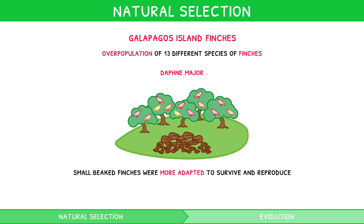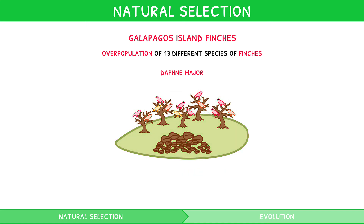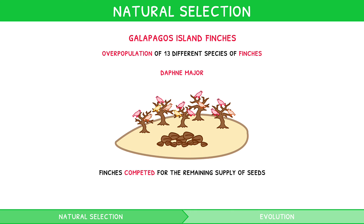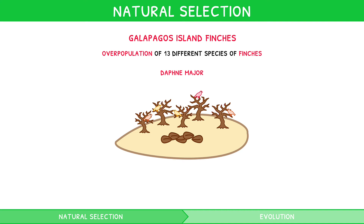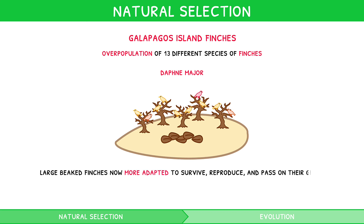However, after a drought in 1977, plants no longer produced seeds. The finches competed for the remaining supply of seeds, so the number of small seeds dwindled, leaving only large seeds behind. As a result, the number of finches with large beaks increased, as they were now more adapted to survive, reproduce, and pass on their genes.